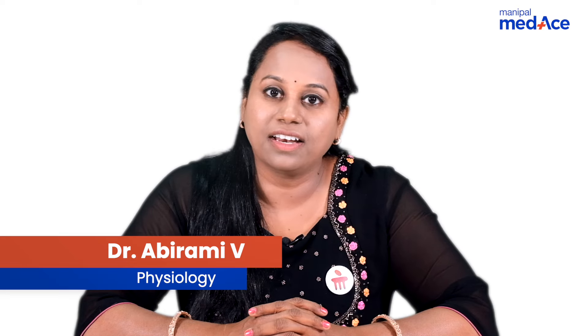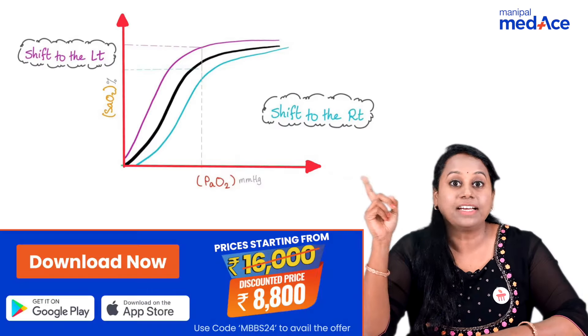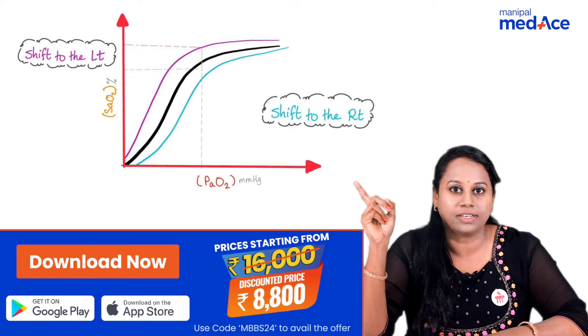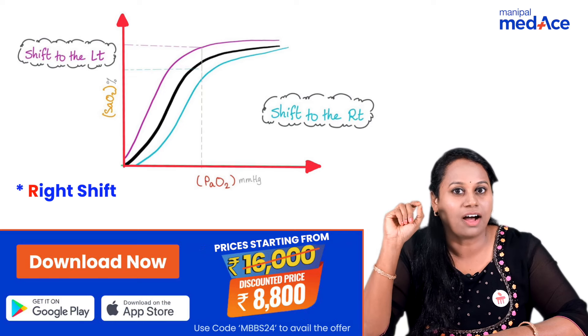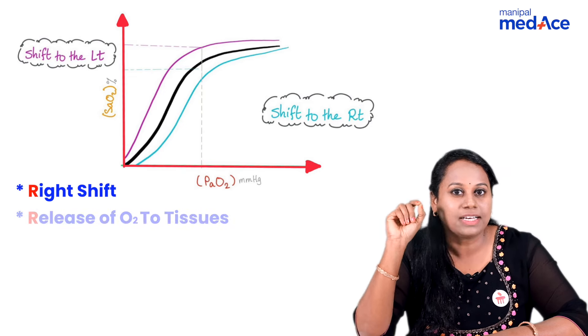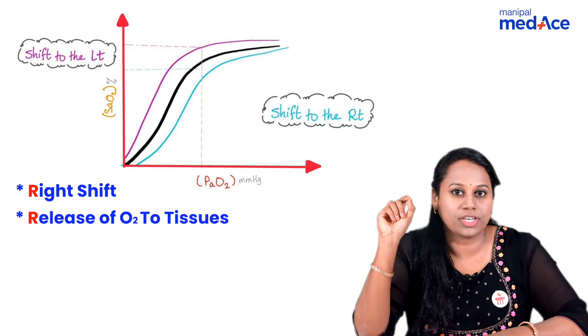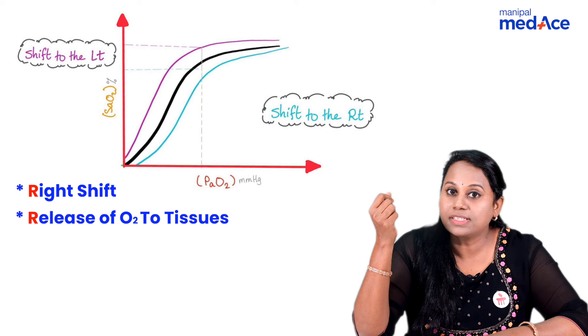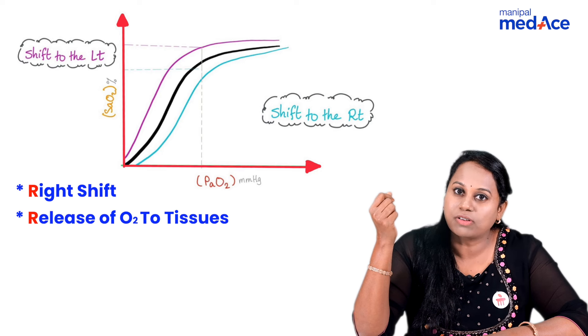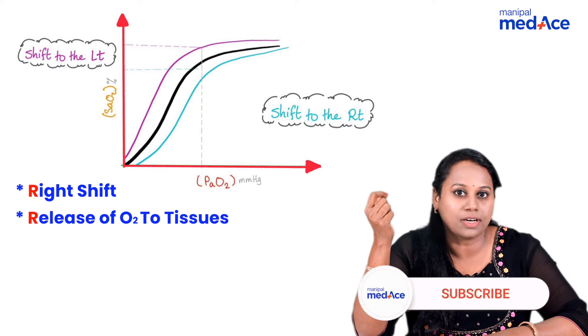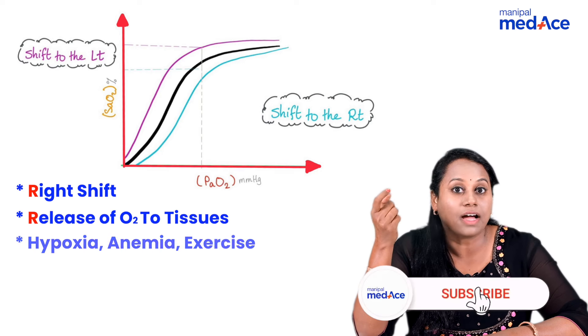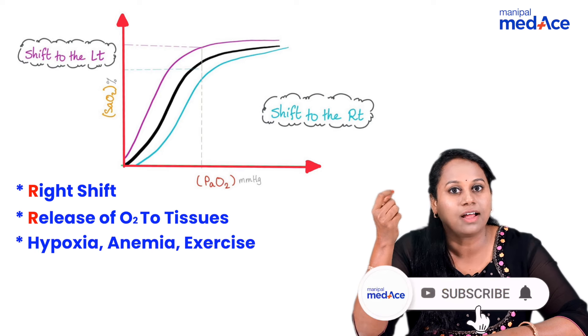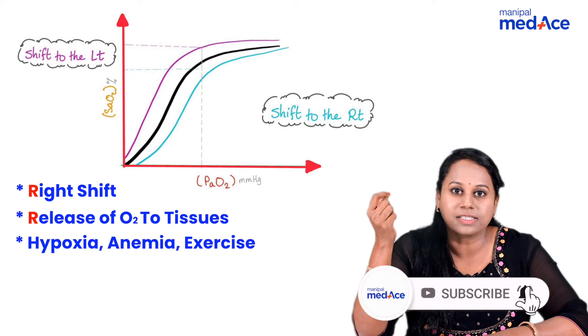Let us have a quick learning of right and left shift of oxygen hemoglobin dissociation curve. Right shift of the curve — R for right shift, R for release of oxygen to the tissues. Whenever there is a need to release oxygen to the tissues, the curve shifts to the right, like hypoxia, anemia, and exercise.